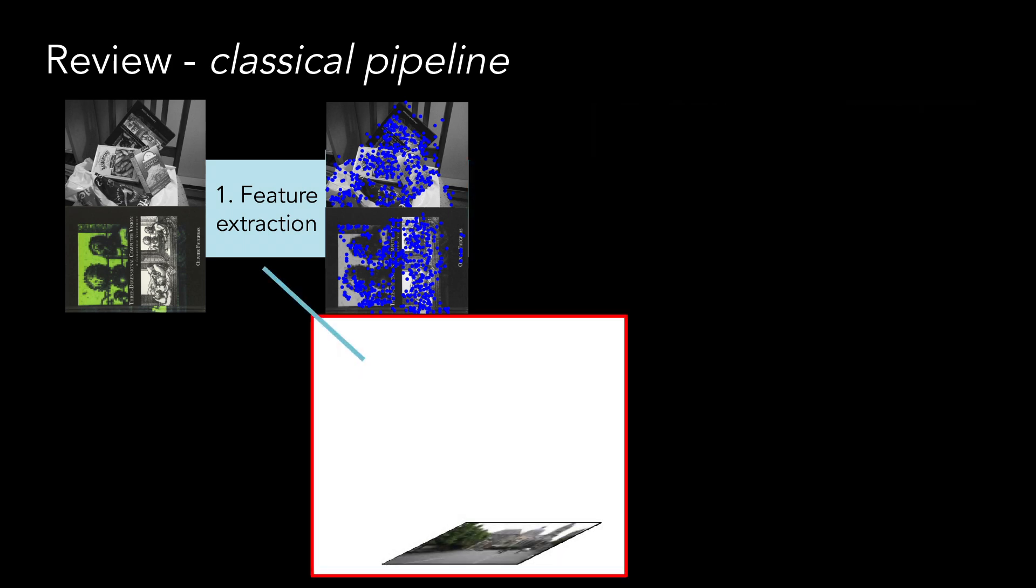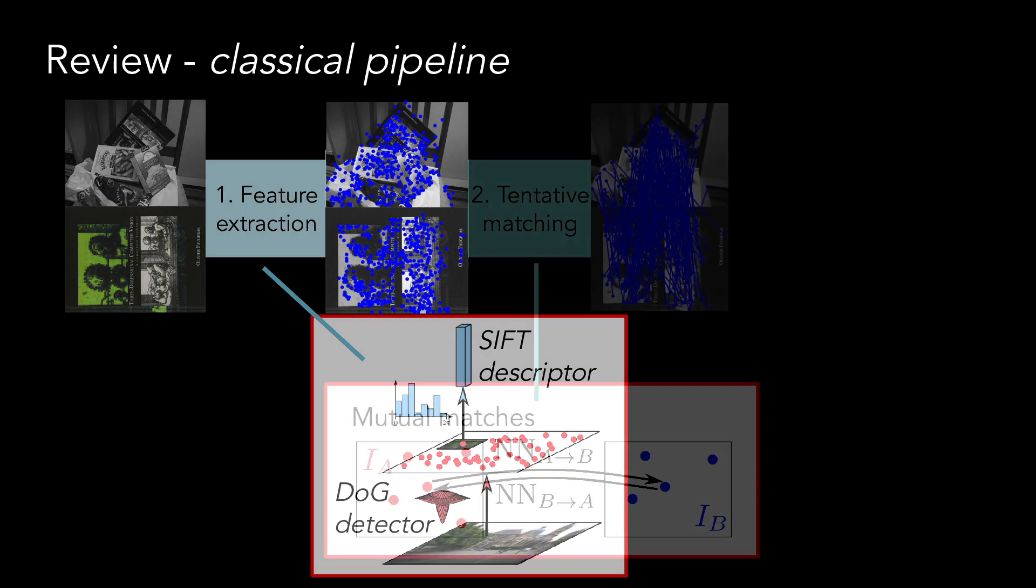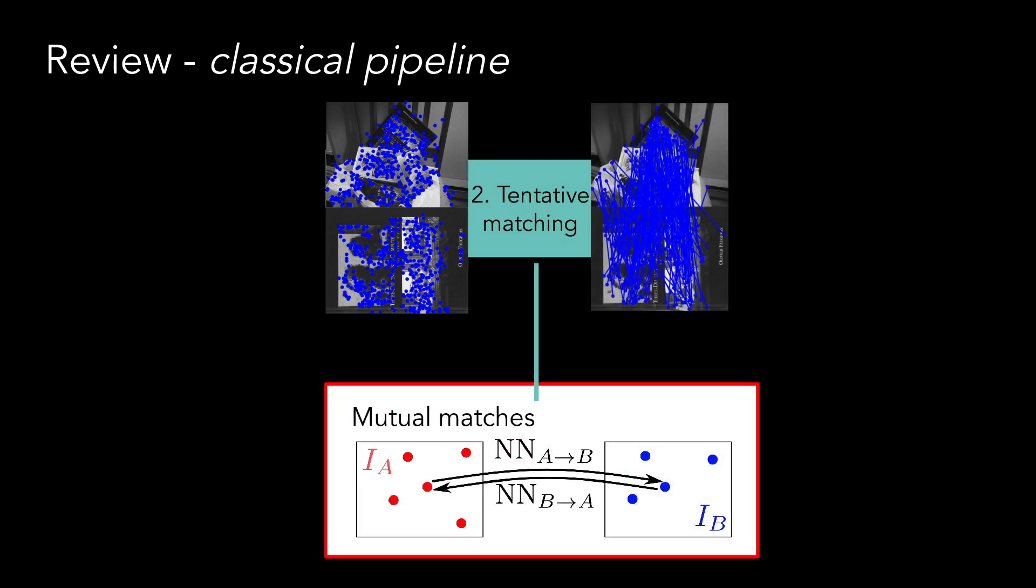Typically, given a pair of input images, a handcrafted detector such as DOG is used to detect local features, which are then described using a handcrafted descriptor such as SIFT. In a second step, tentative matches are established by nearest neighbor search in the descriptor space.